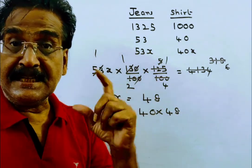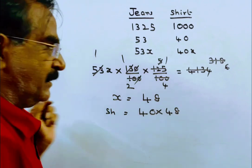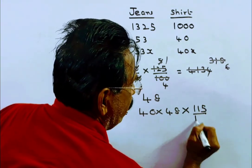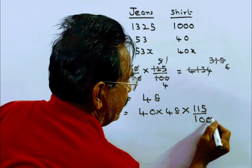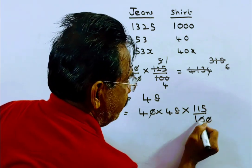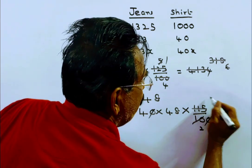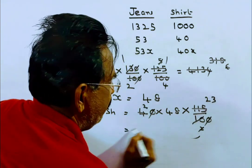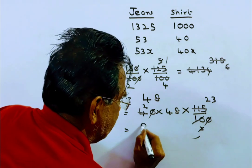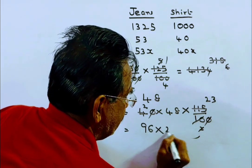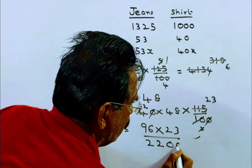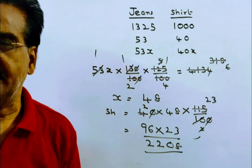The price of the shirt is increased by 15%. So the market price of the shirt becomes 40 into 48 into 115 by 100. On multiplication, it gives you 2208.